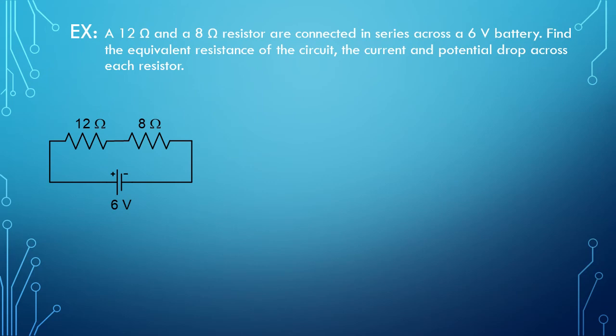Let's solve an example problem to test our understanding. A 12 ohm and an 8 ohm resistor are connected in series across a 6 volt battery. Find the equivalent resistance of the circuit, the current and the potential drop across each resistor.